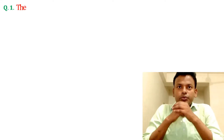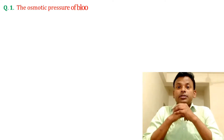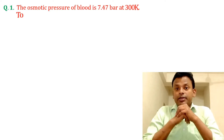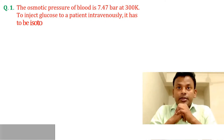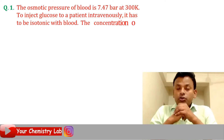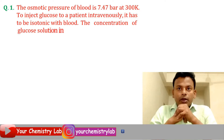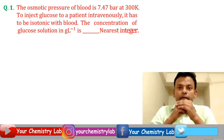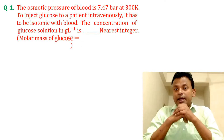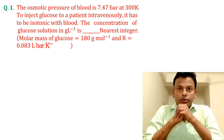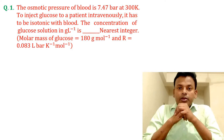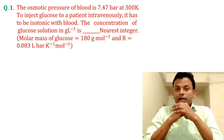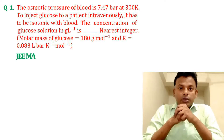Question number one: The osmotic pressure of blood is 7.47 bar at 300 Kelvin. To inject glucose to a patient intravenously, it has to be isotonic with blood. The concentration of glucose solution in gram per liter is dash (nearest integer). Molar mass of glucose is 180 gram per mole and R equals 0.083 liter·bar per Kelvin per mole.